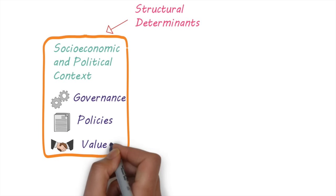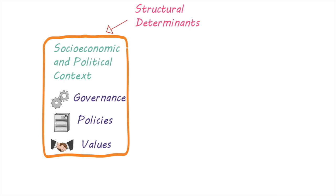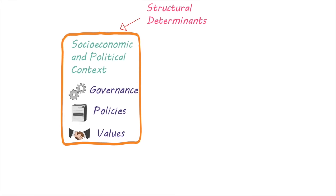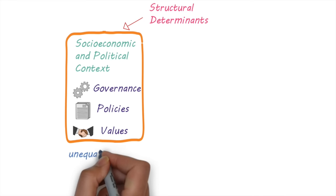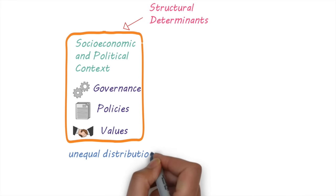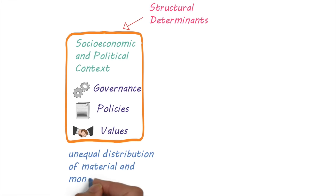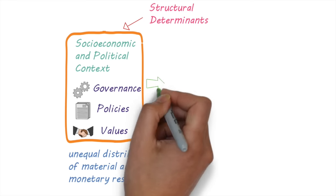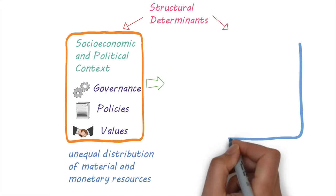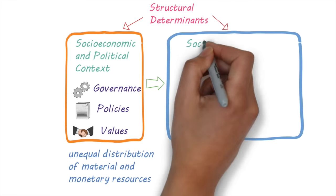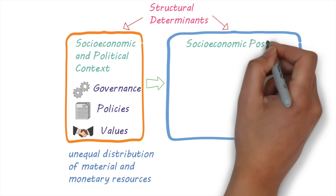Structural determinants also include the social and cultural values that communities place on health. These factors can determine and lead to the unequal distribution of material and monetary resources, which shapes a person's socio-economic position.